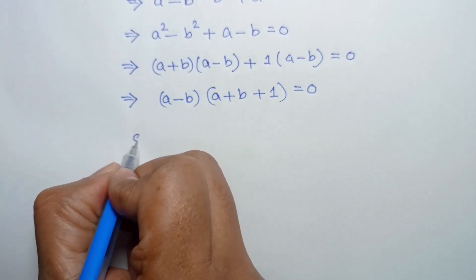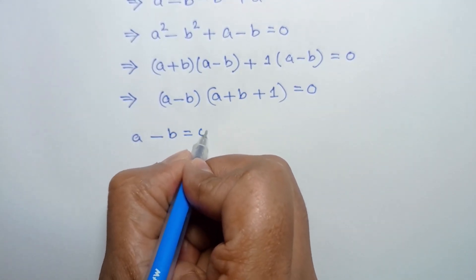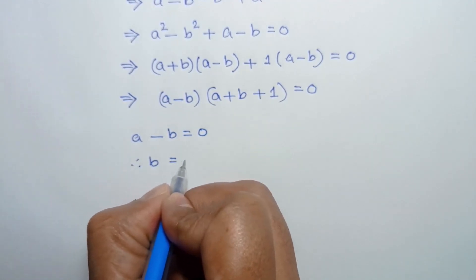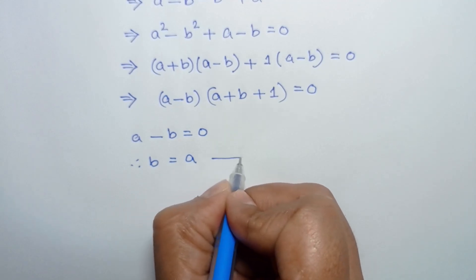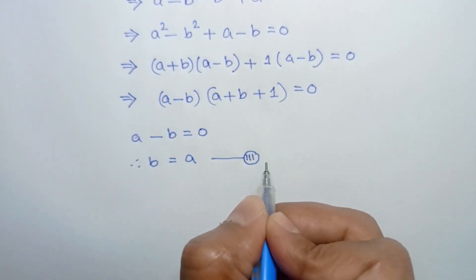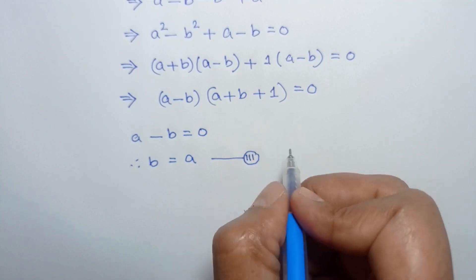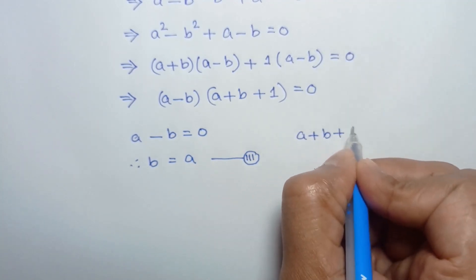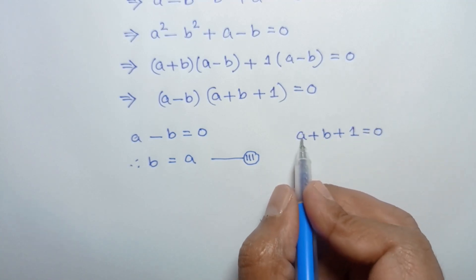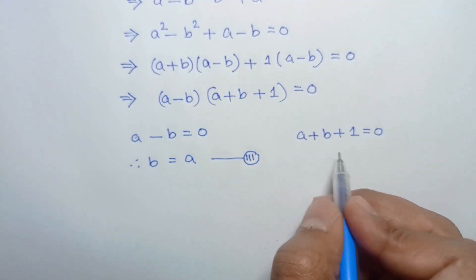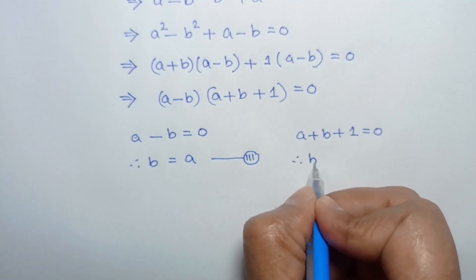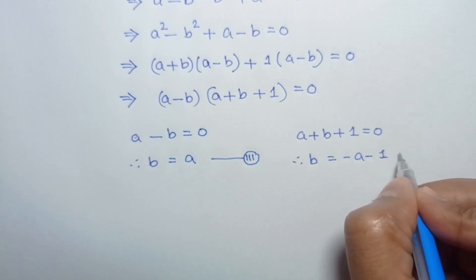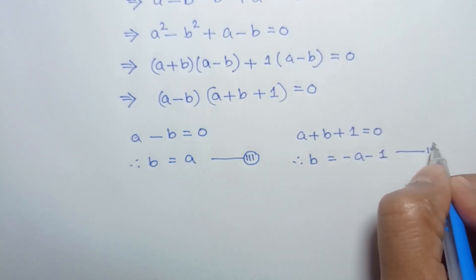So when a minus b is equal to 0, then b is equal to a — call it equation number 3. And when a plus b plus 1 is equal to 0, taking a and 1 to the right side we have b is equal to negative a minus 1 — call it equation number 4.